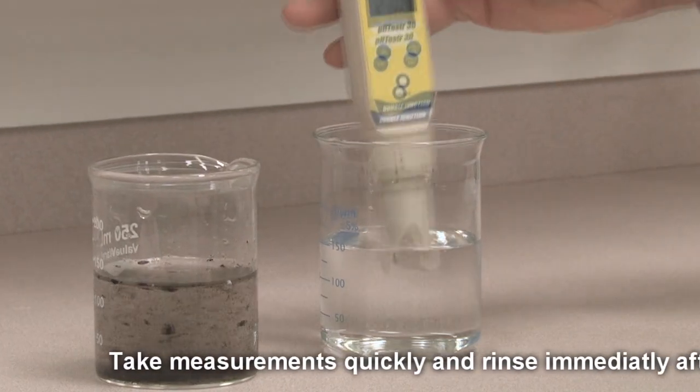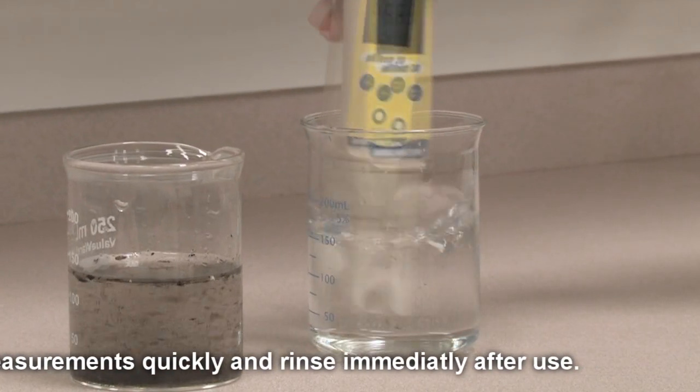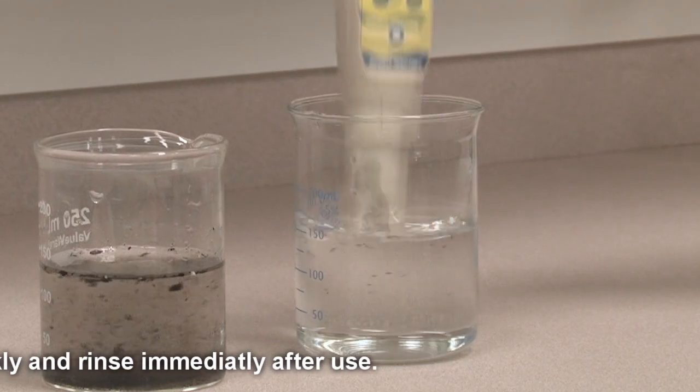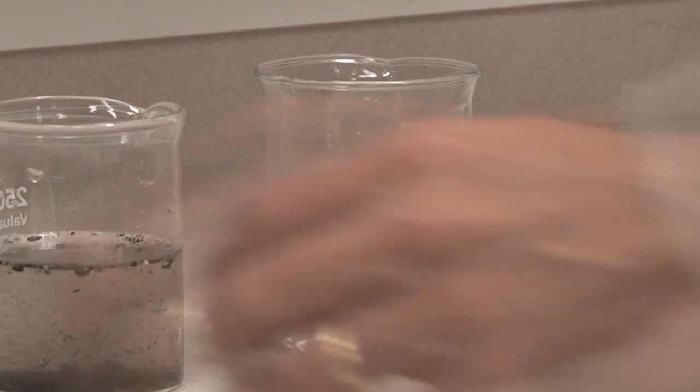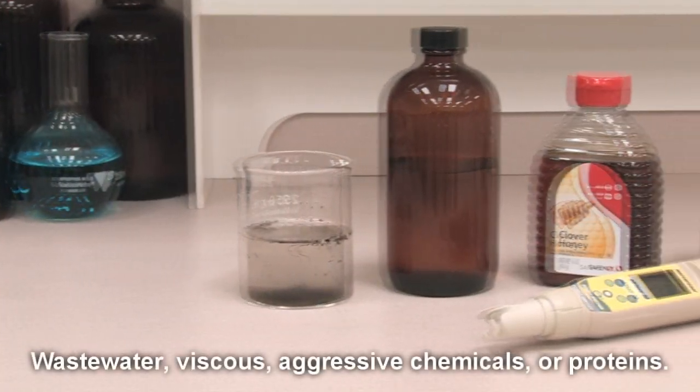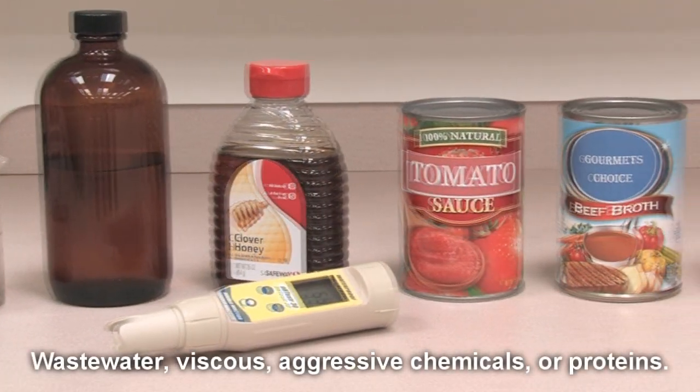When taking measurements in aggressive chemicals, dirty or viscous samples, and heavy metal or high protein solutions, take readings quickly and rinse electrodes immediately after. If performance drops after using these types of solutions, try cleaning and reconditioning the electrode.